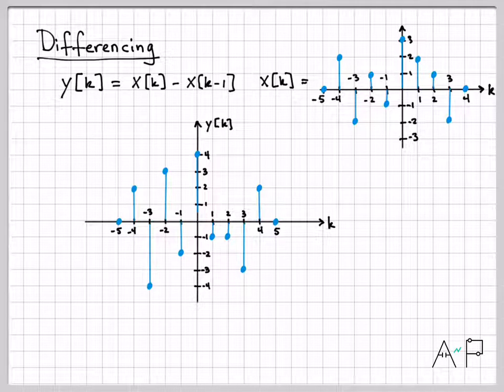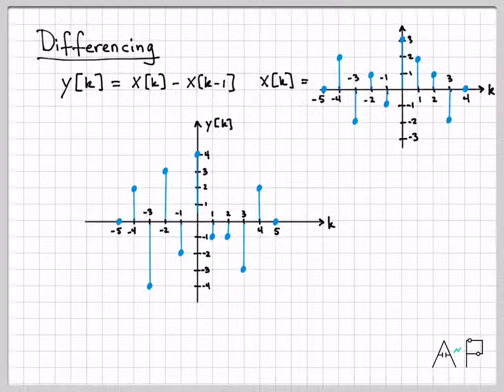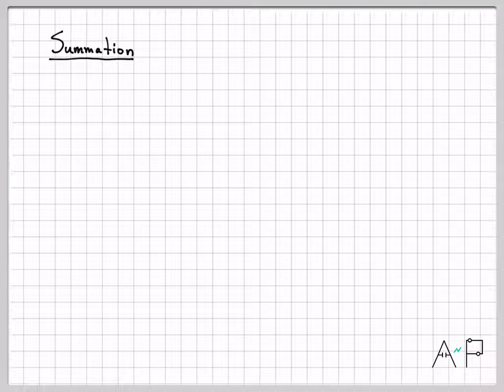Differencing rejects low-frequency content and allows high-frequency content to come through. Now let's do something similar for summation.